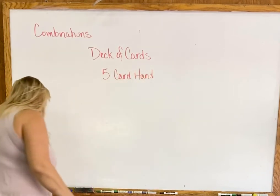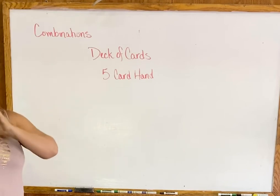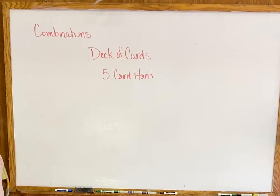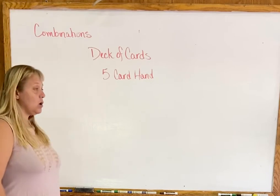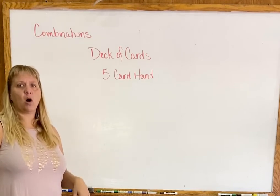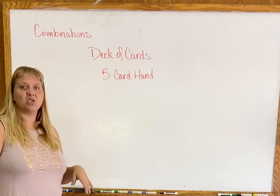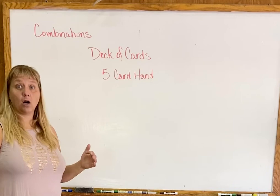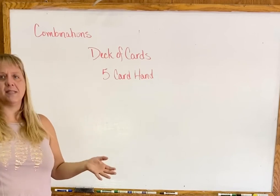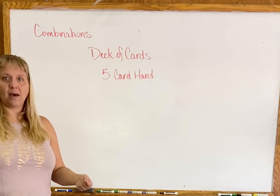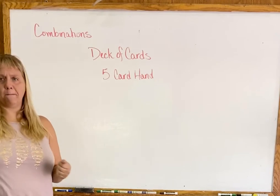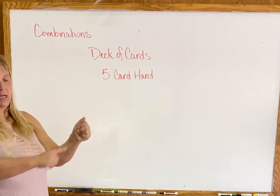The last thing we'll look at is a deck of cards and a five-card hand. The deck of cards will come up in this chapter and the next. If you're not familiar with cards, just Google 'deck of cards' and look at an image. The key facts: there are 52 cards total, four suits — hearts, diamonds, clubs, and spades — and in each suit the cards go from 2 through 10, then Jack, Queen, King, and Ace.